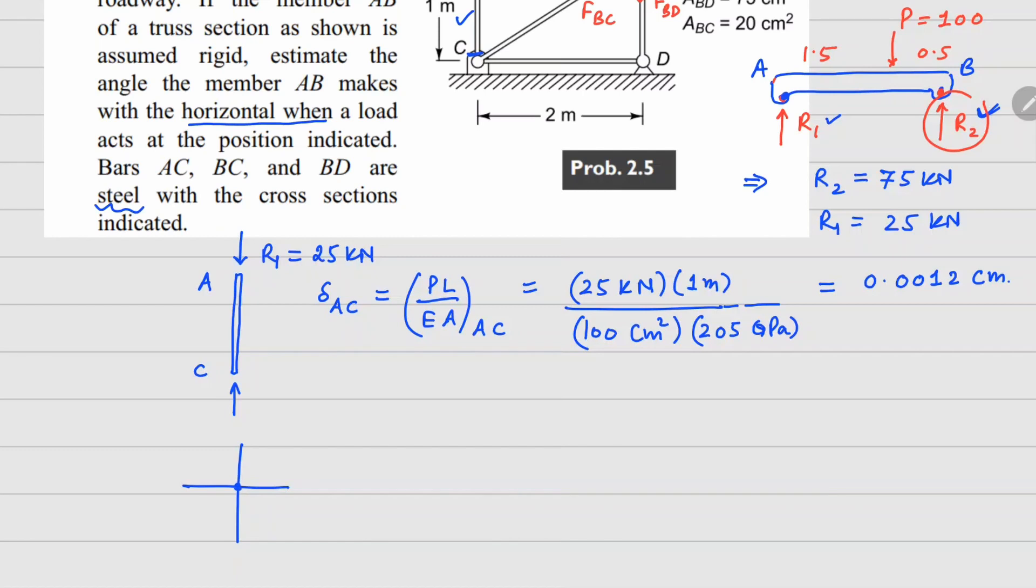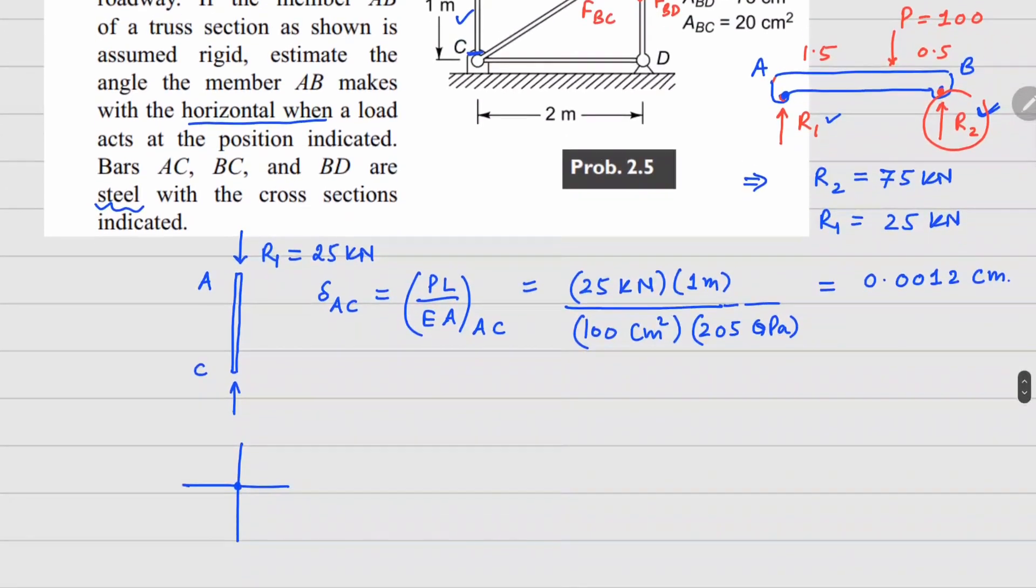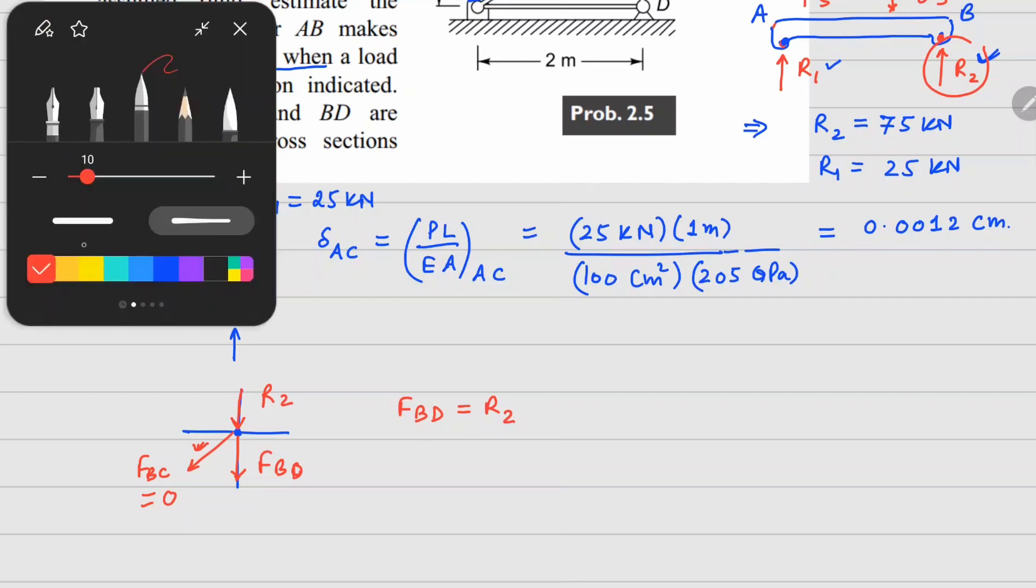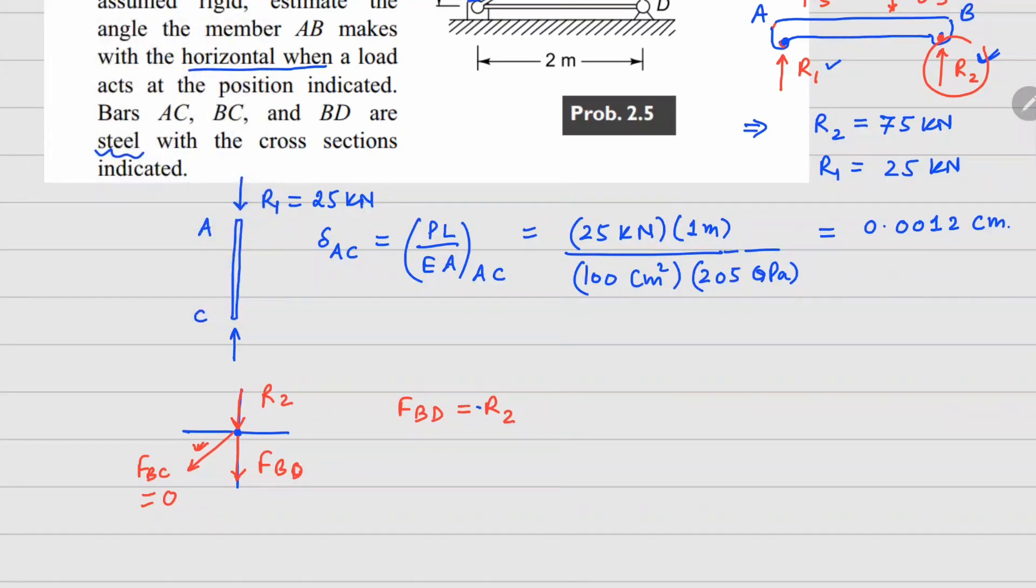Joint B - I can draw these forces. So your R2 goes down here, your FBC goes here, and your FBD is on this side. Now since only FBC has an x component, this FBC has to be equals to 0. Now from this we can see that your FBD is going to be R2, and the sign comes out as negative because it's going to be a compressive force.